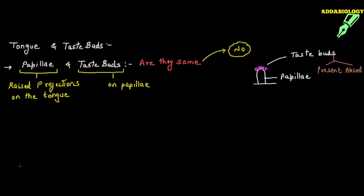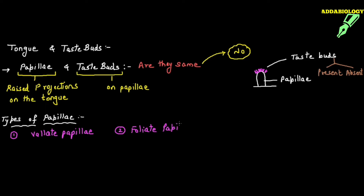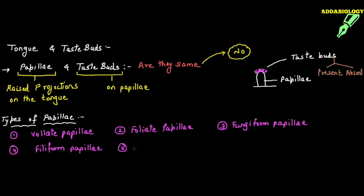Now, how many types of papillae are there? The NCERT book does not cover all types clearly, so I will cover all of them. The first type is vallate papillae, also known as circumvallate papillae. The second is foliate papillae. The third is fungiform papillae — remember the name and you can remember the shape. The fourth is filiform papillae. And the last one is papillae simplex, which does not show a projection.